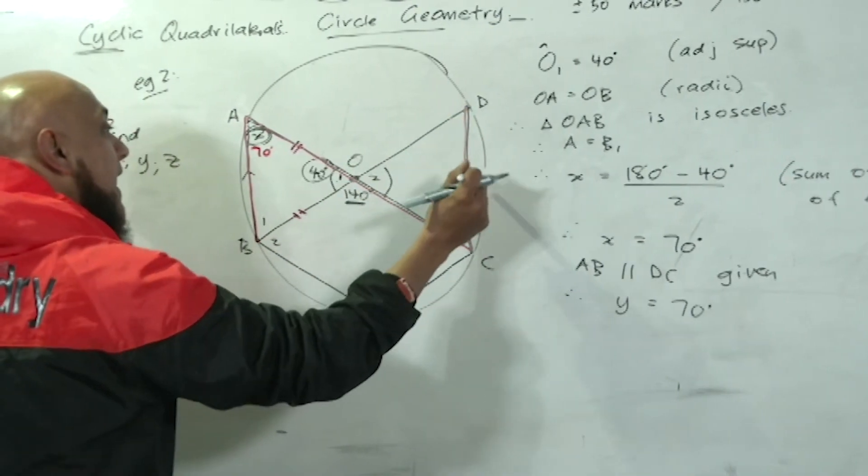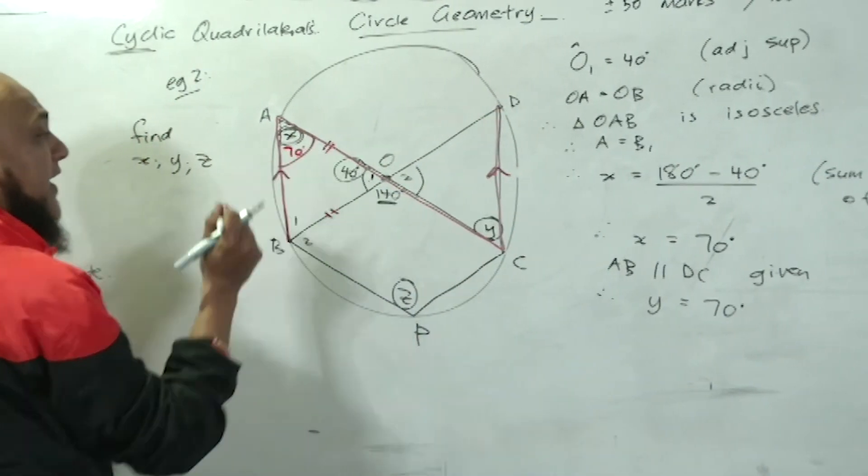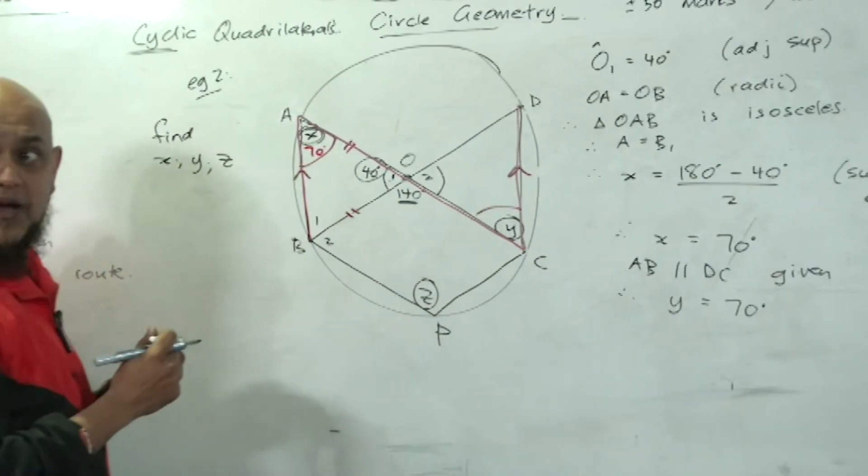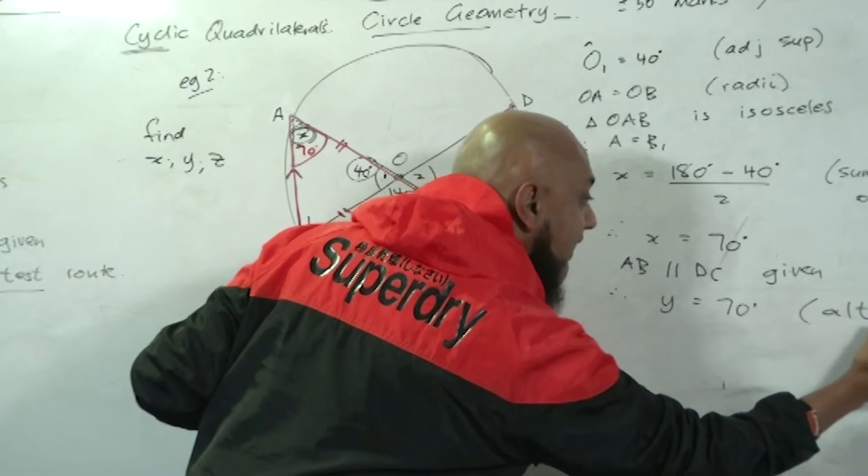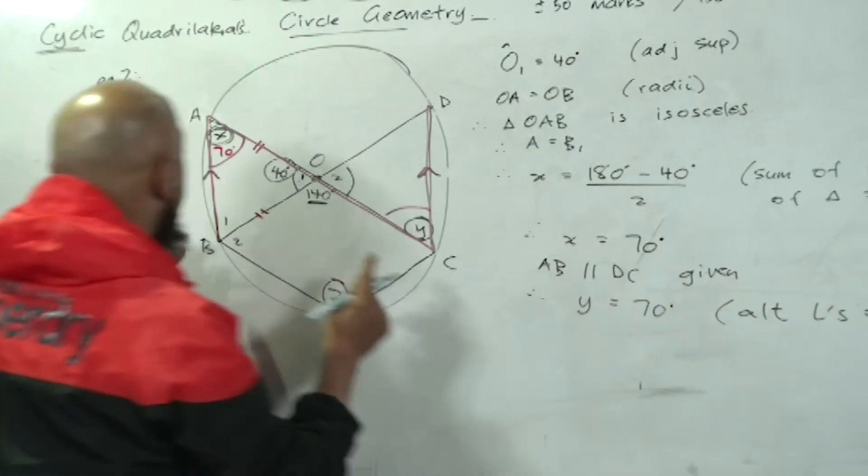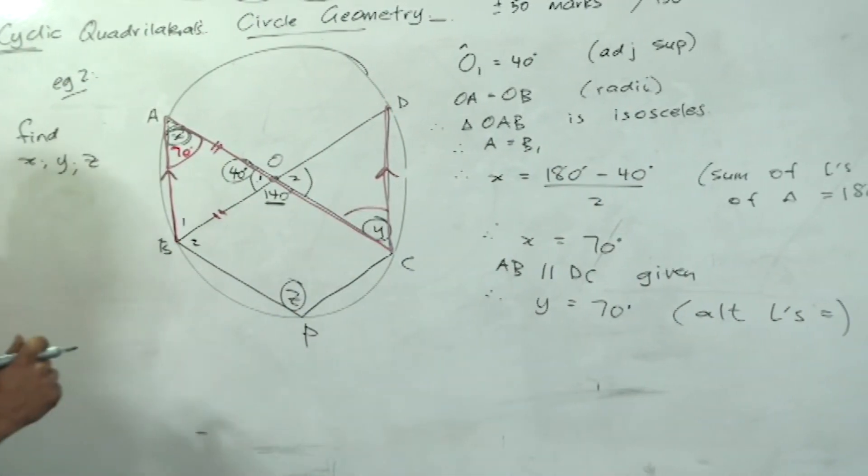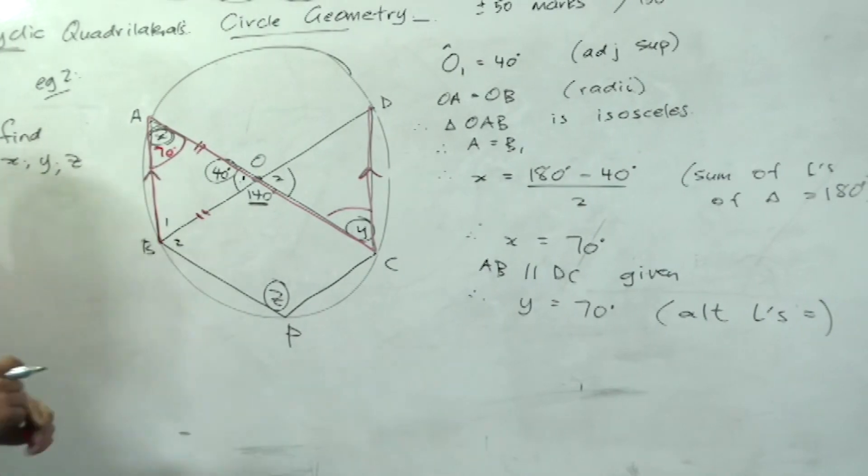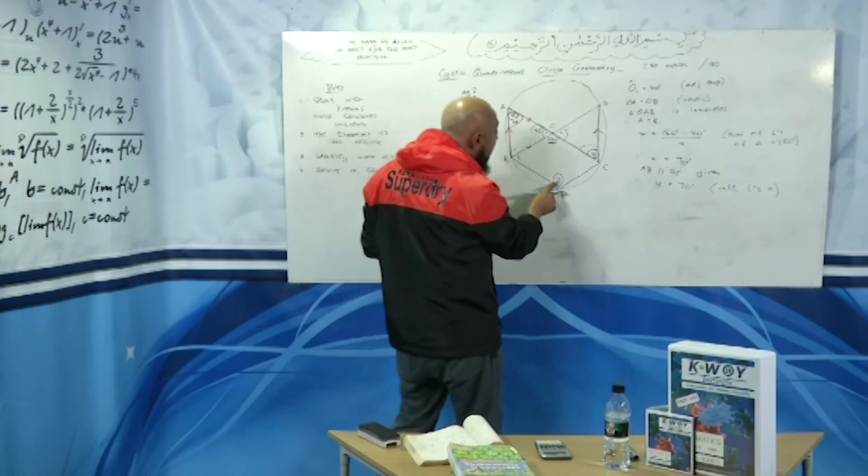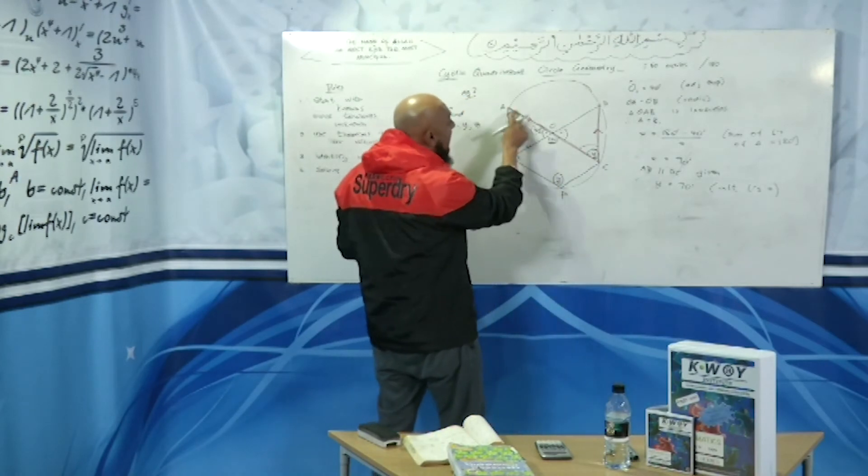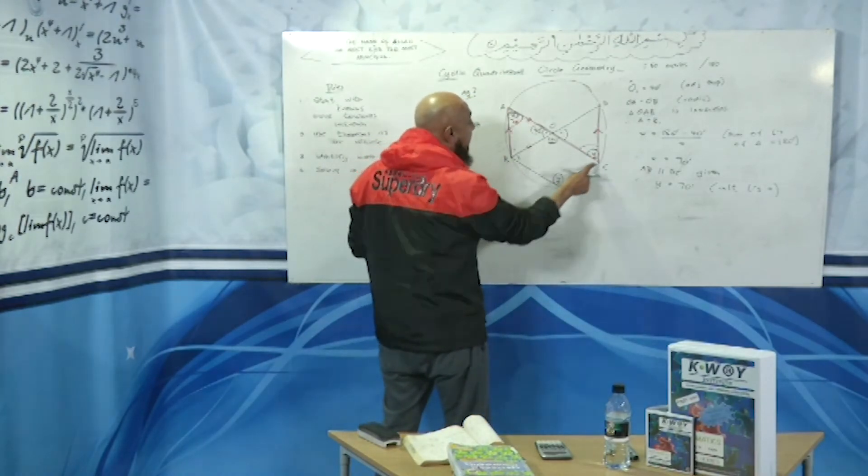Therefore, angle y is also equal to 70. The Z shape—these two lines are parallel, so if x is 70, y must be 70. Alternate angles are equal. So if this is 70 degrees, that is 70 degrees. We are approaching our ad break before our last segment.